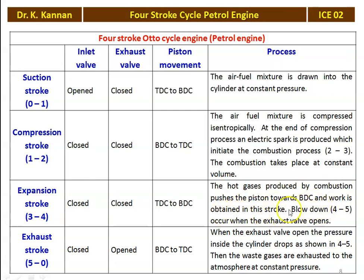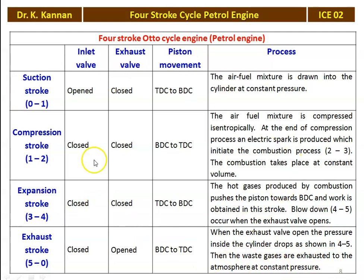Blow down occurs from 4 to 5 when the exhaust valve opens. Then for the exhaust stroke, 5 to 0: inlet valve closed, exhaust valve open, piston moves from BDC to TDC. When the exhaust valve opens, pressure inside the cylinder drops from 4 to 5, then the waste gases are exhausted to the atmosphere at constant pressure. These are all six operations occurring over four different strokes — this is the working of the petrol engine.